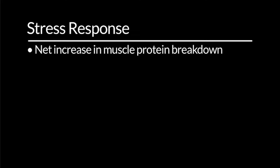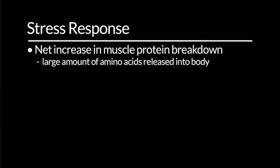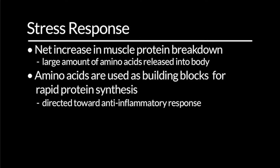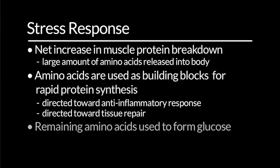In general, there is a net increase in muscle protein breakdown, resulting in a large amount of amino acids being released into the body pool. These free amino acids are used as building blocks for rapid synthesis of proteins directed toward the anti-inflammatory response and tissue repair. The remaining amino acids are then used as gluconeogenetic precursors — their carbon skeletons are used to form glucose.